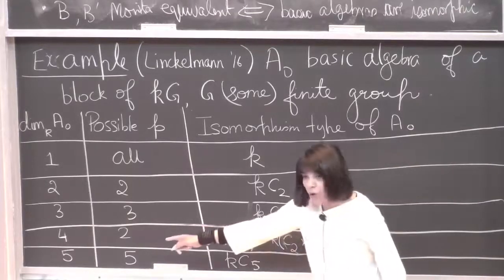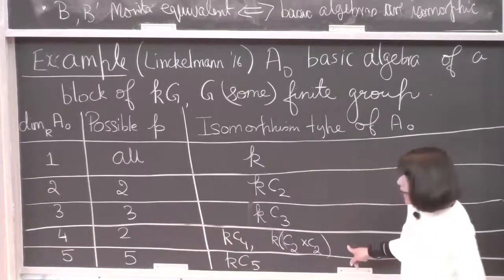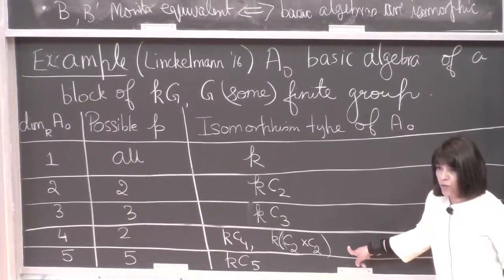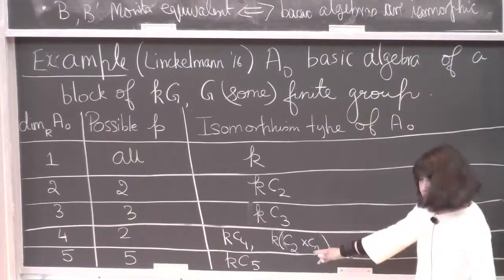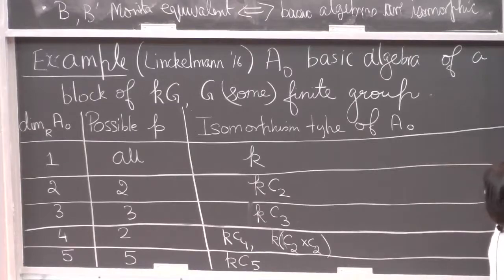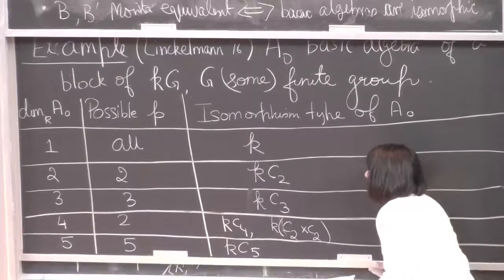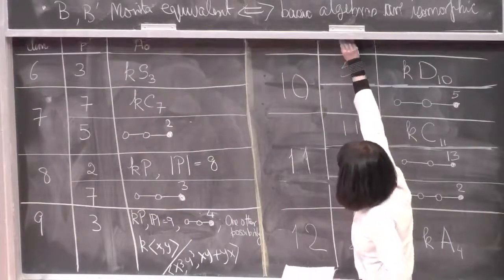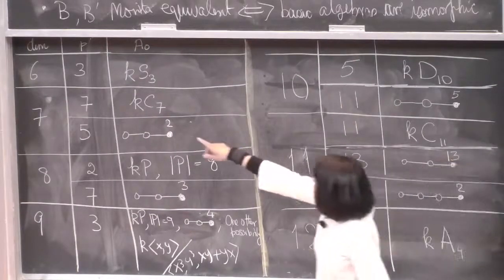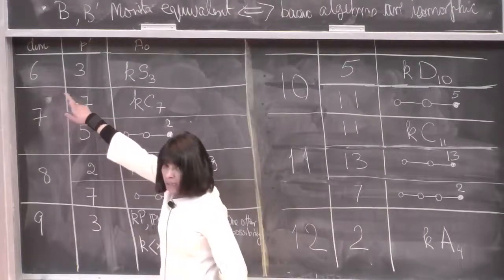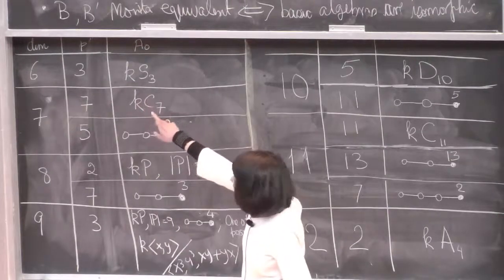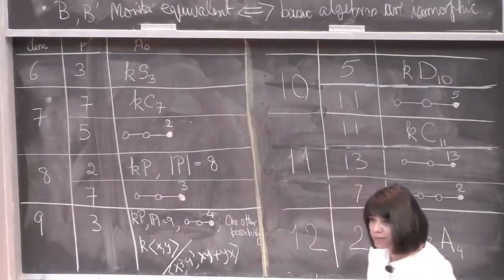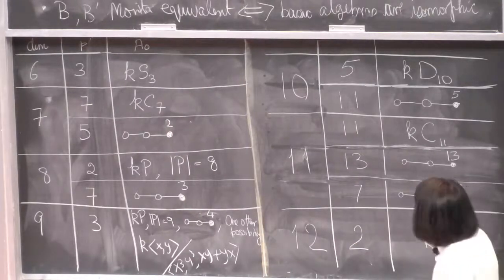Dimension 4: only prime is 2, and you get group algebras of the groups of order 4. Dimension 5: same. Dimension 6: only possibility is prime 3, and we've already seen this block — kS3, which happens to be basic as well.